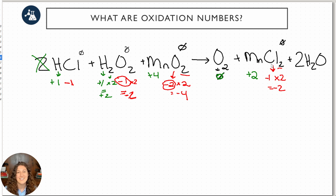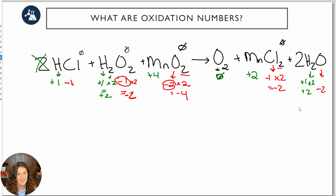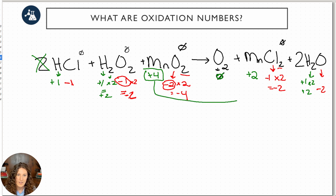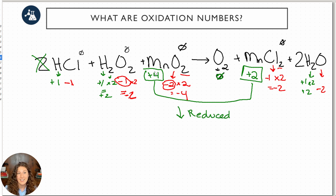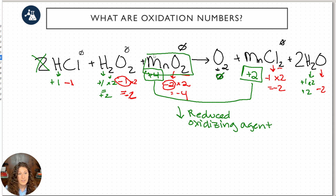For H2O, which follows all normal rules: hydrogen is plus one times two equals plus two, and one oxygen is negative two — adding up to zero. Now let's look at manganese: it started as plus four in the reactants and ended as plus two in the products. Its oxidation number went down, which means it was reduced — it gained electrons. Therefore, MnO2 is our oxidizing agent.